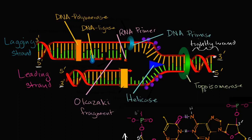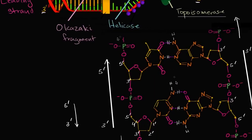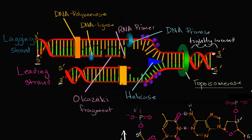That enzyme is topoisomerase. The way it actually works is it breaks parts of the backbones temporarily so that it can unwind, and then they get back together. Then the helicase enzyme — which doesn't really look like the little triangle in this diagram; these enzymes are far more fascinating when you see their actual molecular structure — is breaking those hydrogen bonds between our nitrogenous bases. For example, between an adenine and a thymine, it breaks that hydrogen bond. So first, topoisomerase unwinds it, then helicase breaks the strands apart.